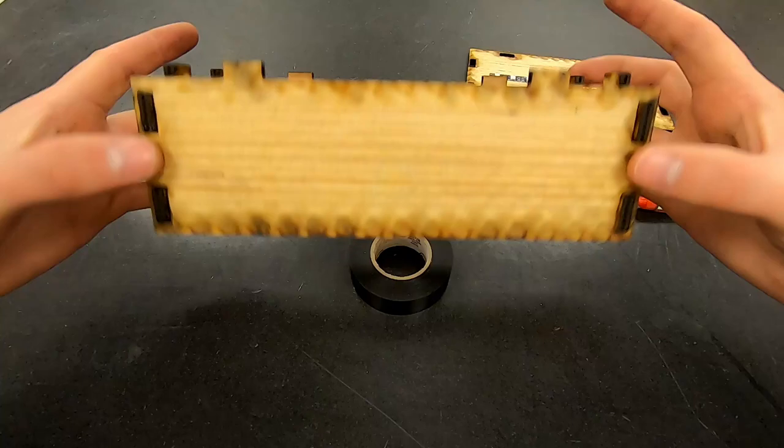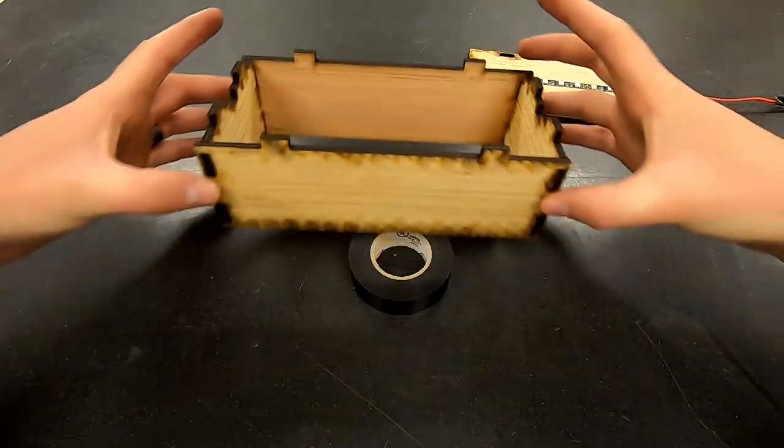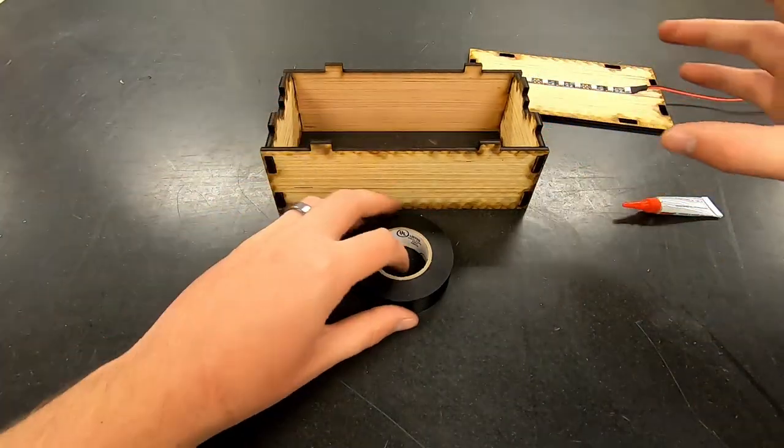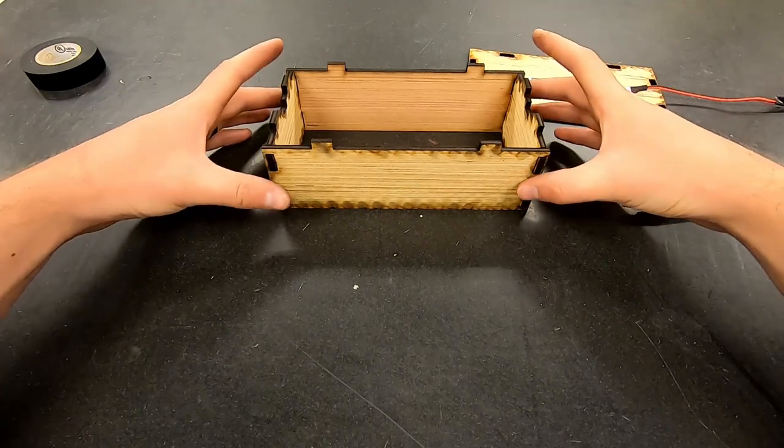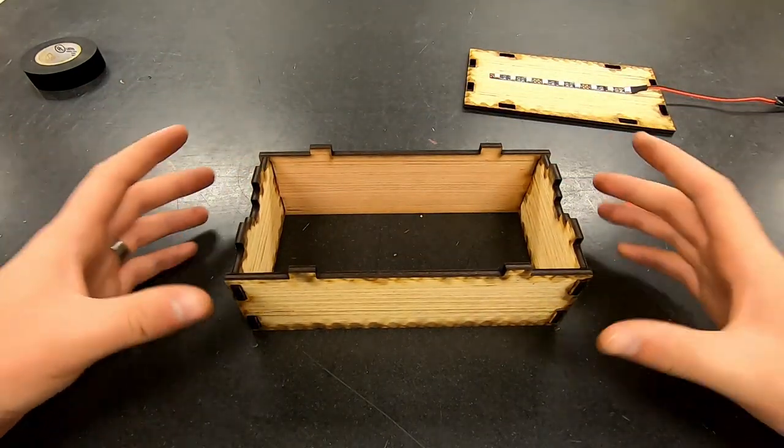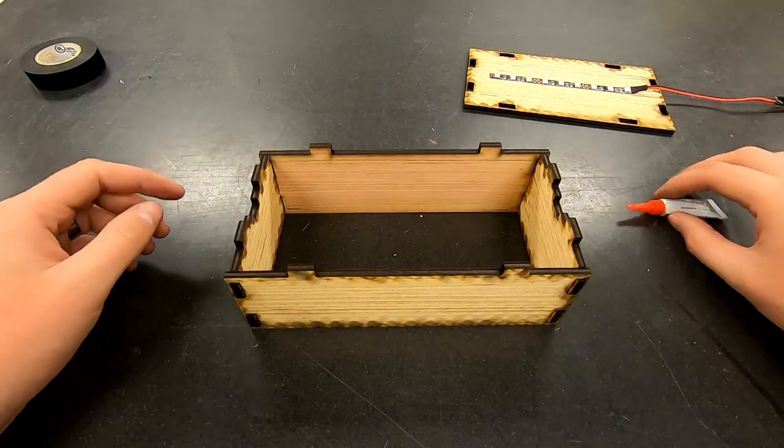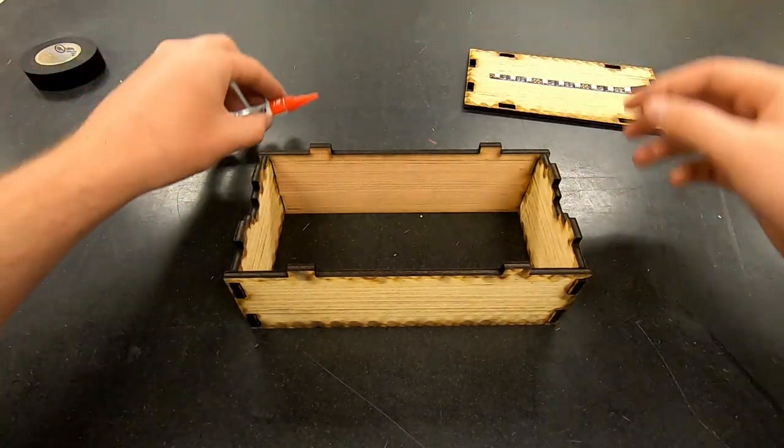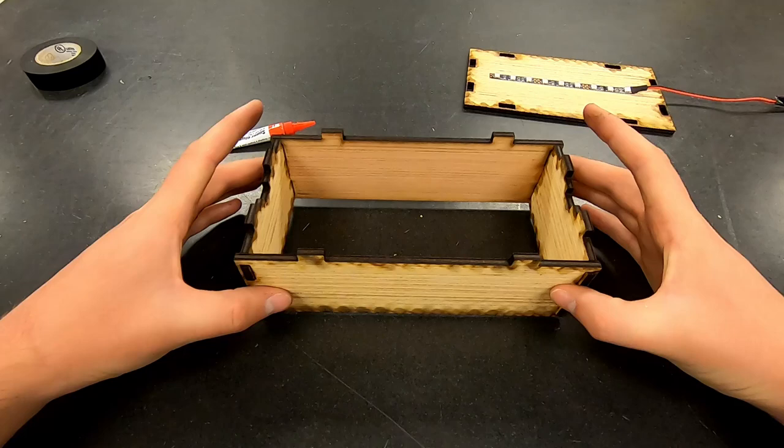Now the base of the box should be held together a little bit loosely. You can take whatever you're using to hold it up and set it away. Now this will dry a lot more solidly in about 10 to 15 minutes. But for now it should be tacked in place alright.